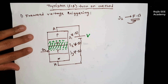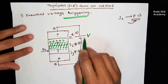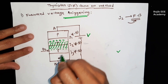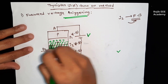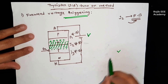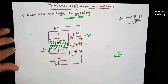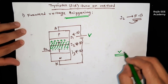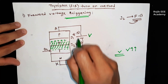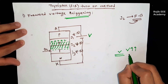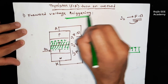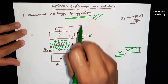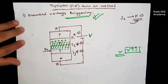Once the device is in the on-state, the surface area conducts. This is the big disadvantage of the forward voltage turn-on method, as it may cause unintended turn-on.